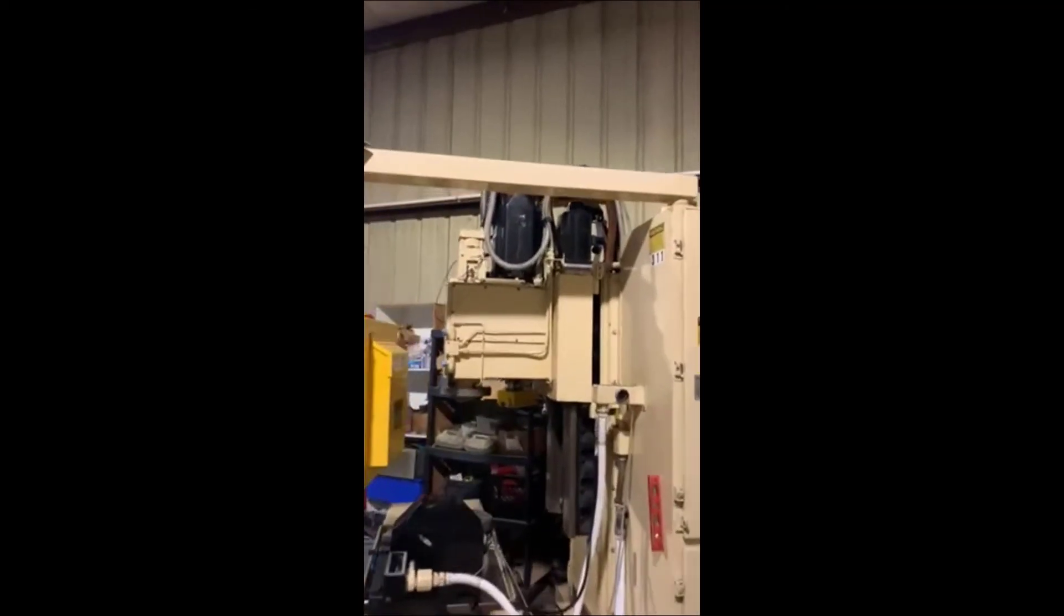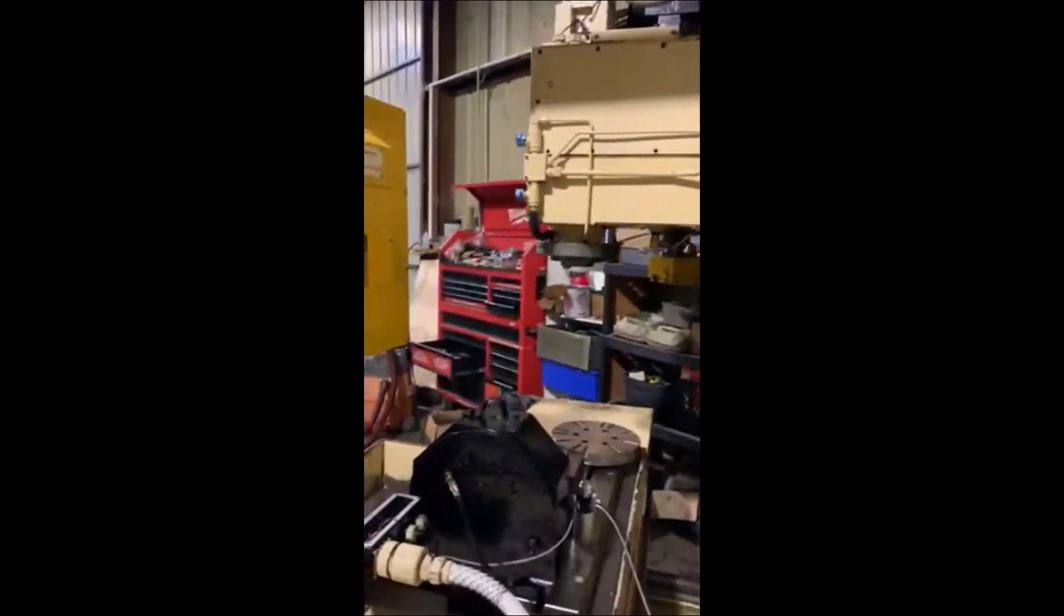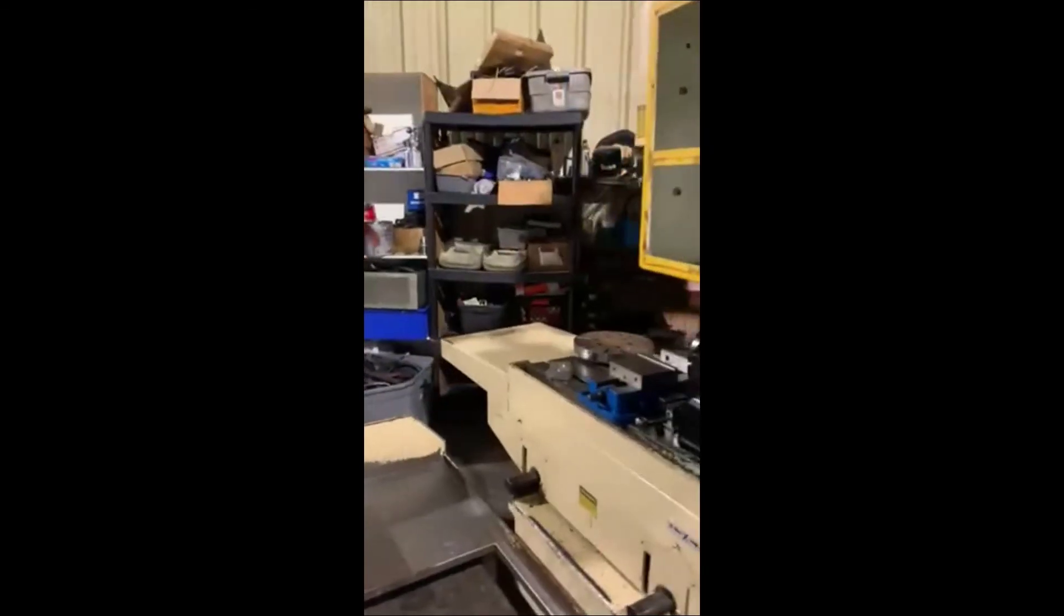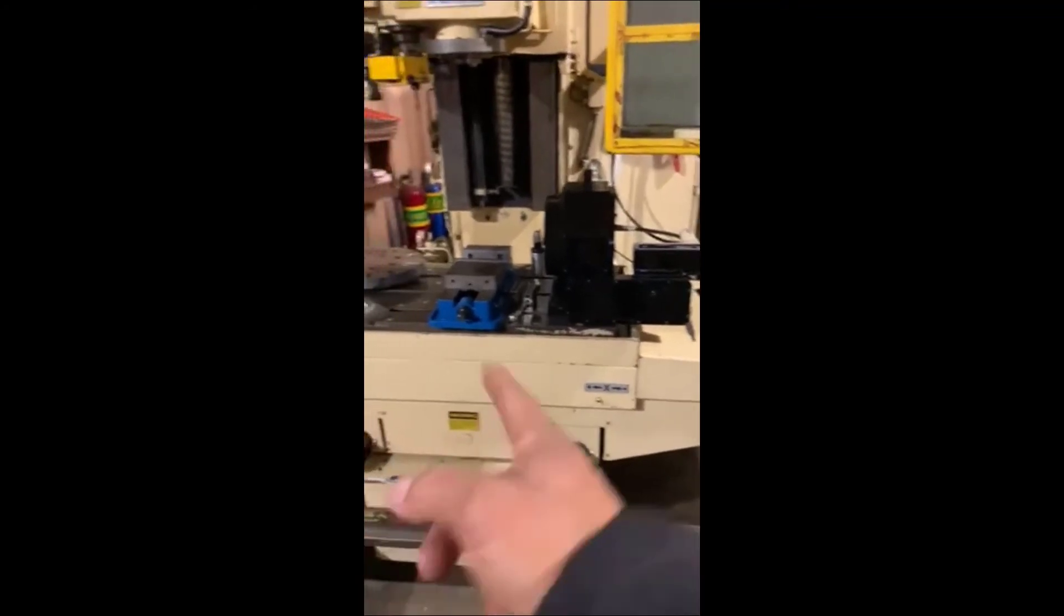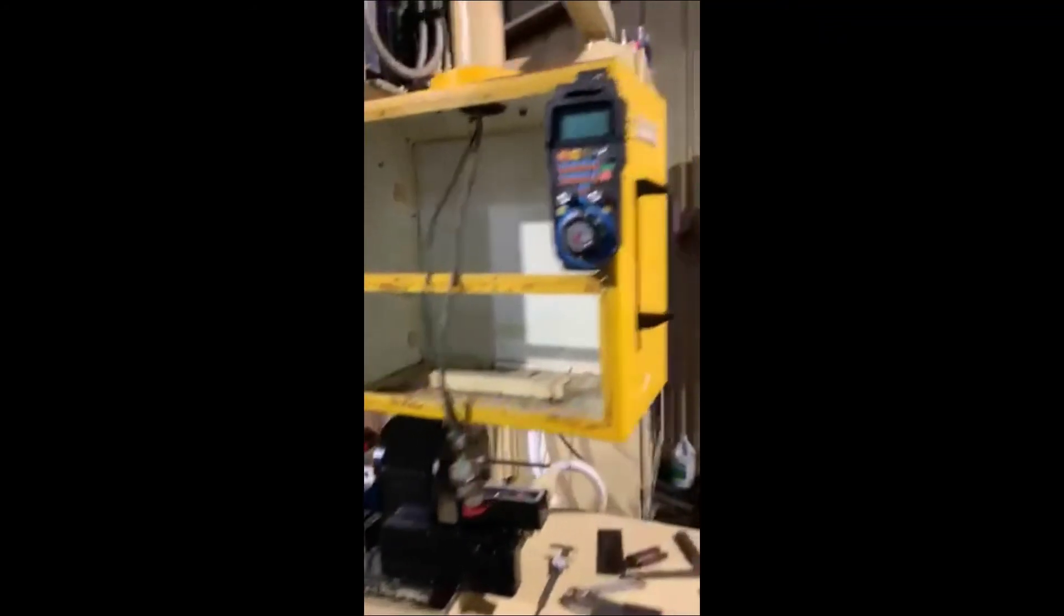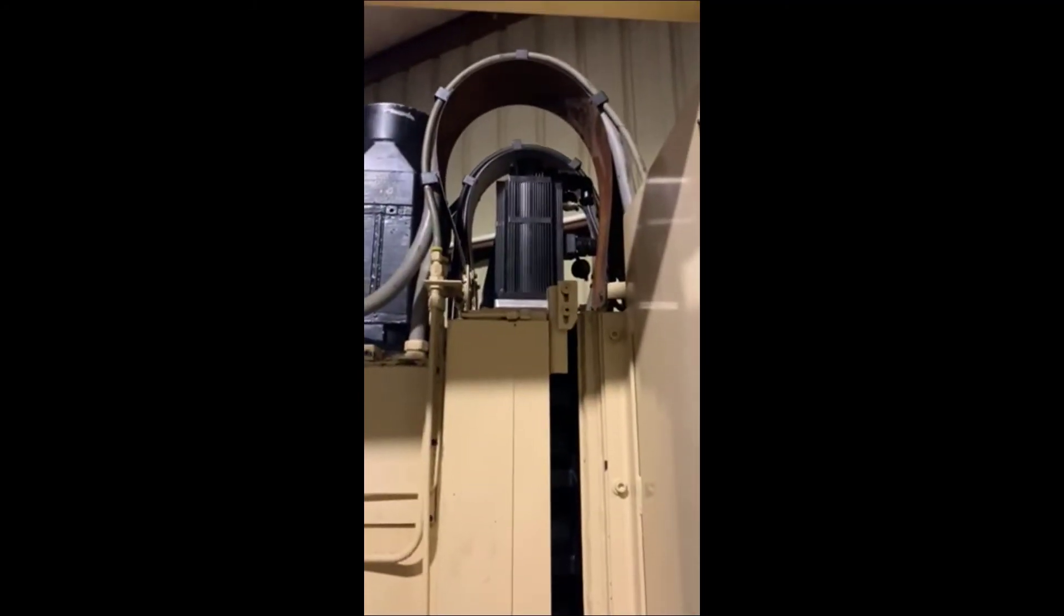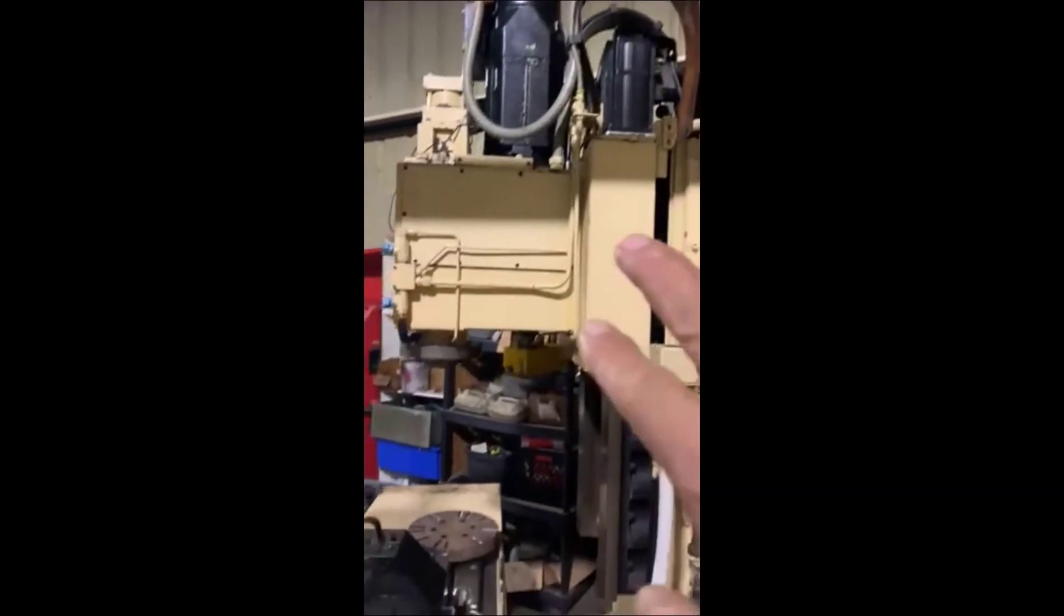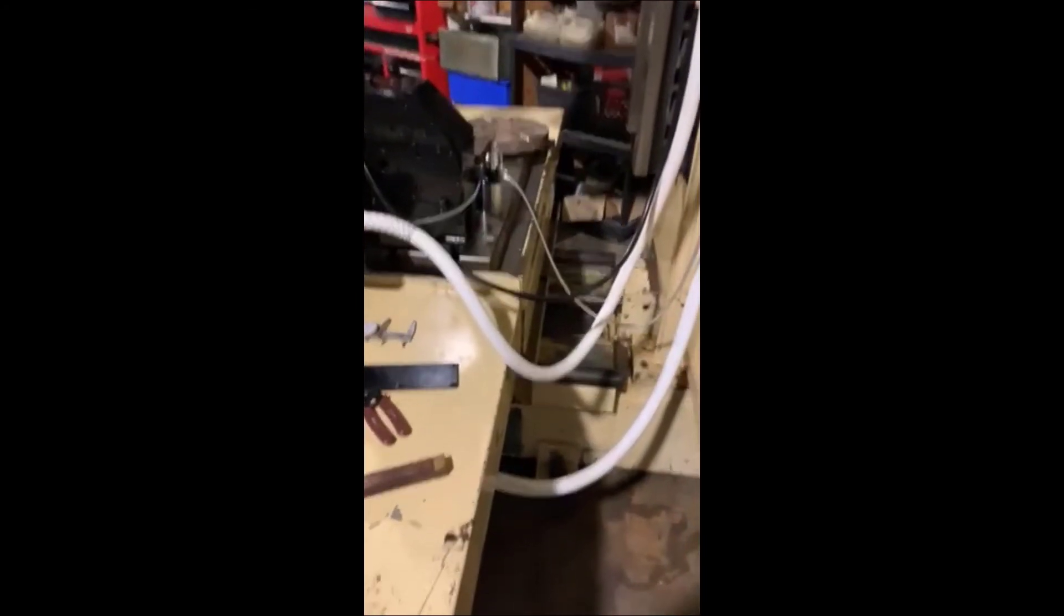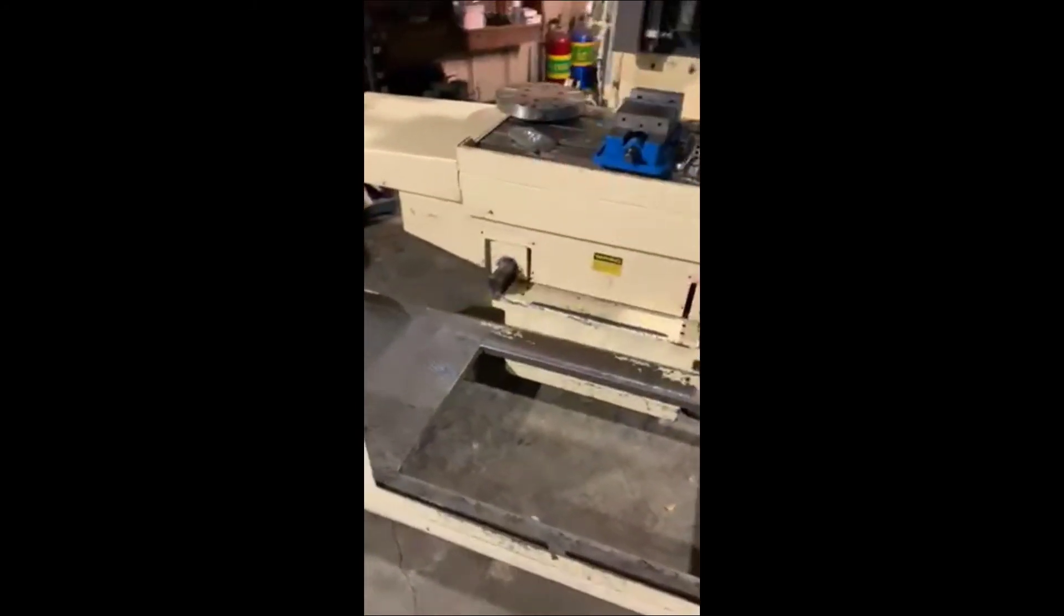Got several drives everywhere. That's a NEMA 52, and I got NEMA 43s, I think, on the X and Y, and 52 on the C with the brake. That's a 2.6 kilowatt C-axis because that thing is 900 pounds. And that's it.